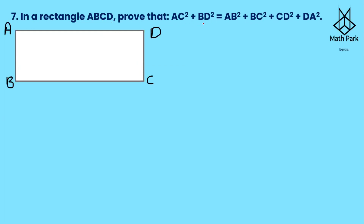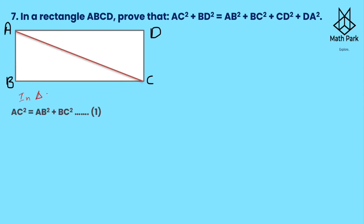Question number 7: In rectangle ABCD, prove that AC² + BD² = AB² + BC² + CD² + DA². Let us join the diagonal AC. By Pythagoras theorem in triangle ABC, we get AC² = AB² + BC². Let this be equation one.